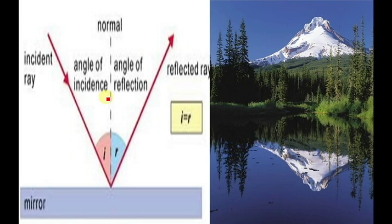What is the reflection of light? It is a phenomenon. Reflection is the change in direction of a wavefront or a ray at an interface between two different media, so that the wavefront or ray returns into the medium from which it originated. This is the definition of reflection.